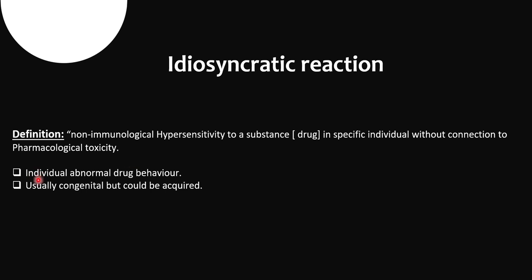First point is individual abnormal drug behavior — drug ka behavior har individual mein abnormal dekhne ko milega, that is idiosyncratic reaction. And next is usually congenital but can be acquired — means at the time of birth, uski body hi aisi hai ki usne us particular drug ke liye aisa response show kiya. By birth bhi aisa ho sakta hai, but in some cases it can be acquired — baad mein yeh cheez uski body mein develop hui. So this was all about today's video. Thank you.